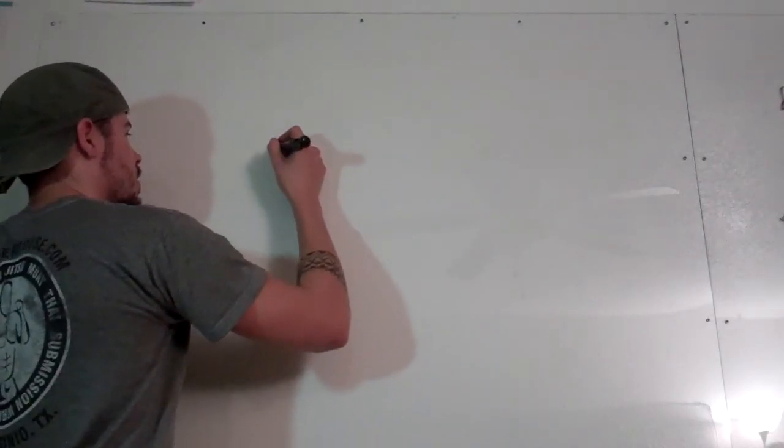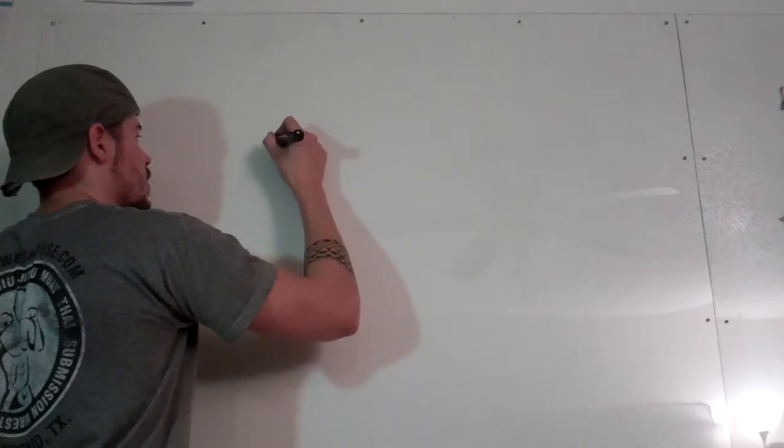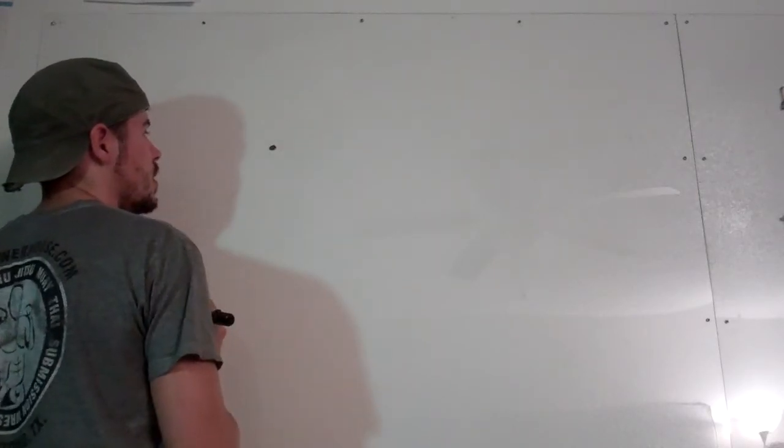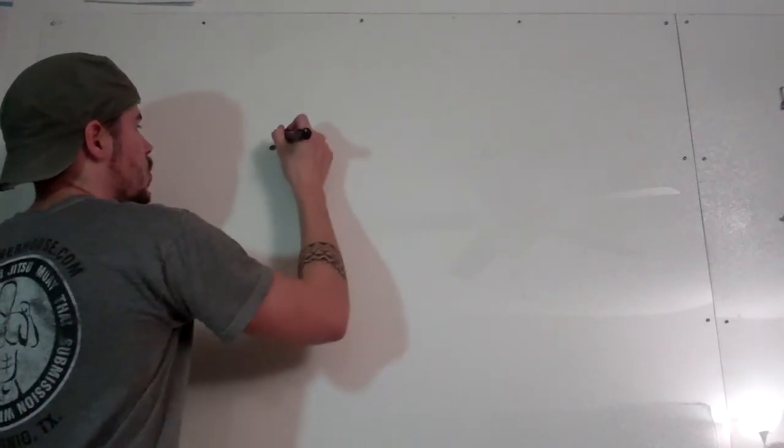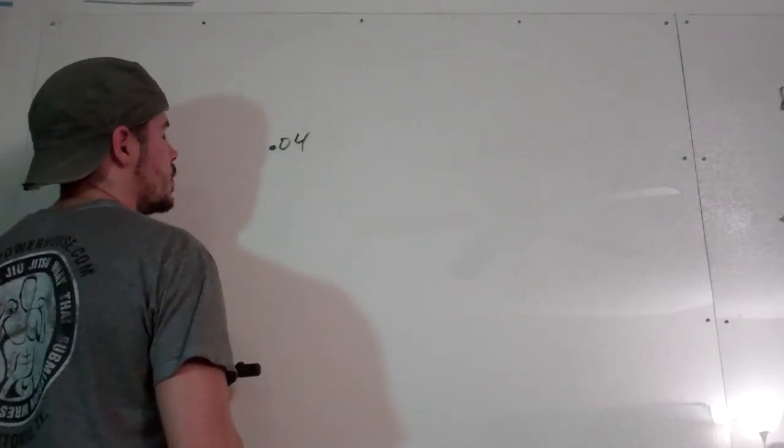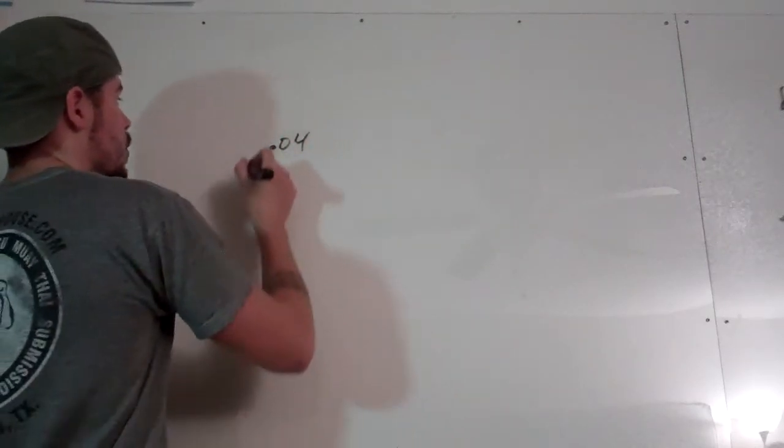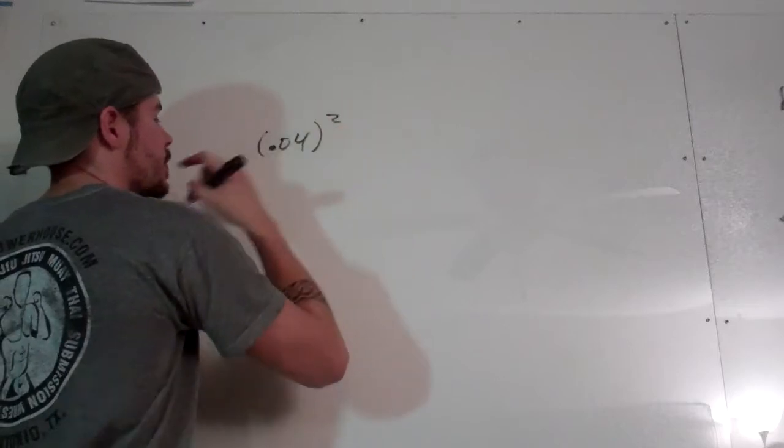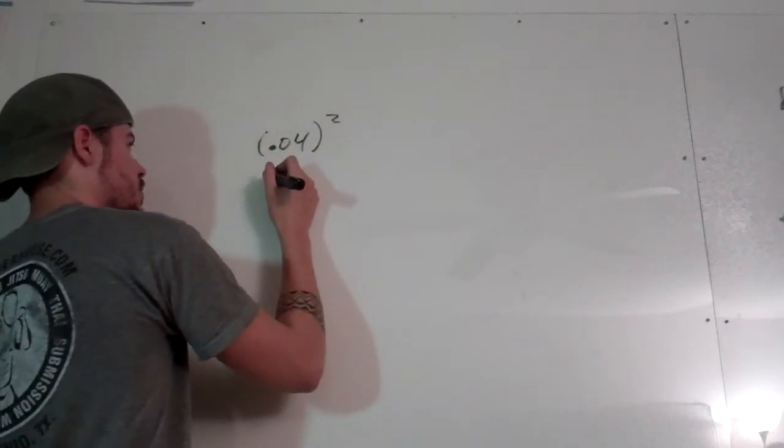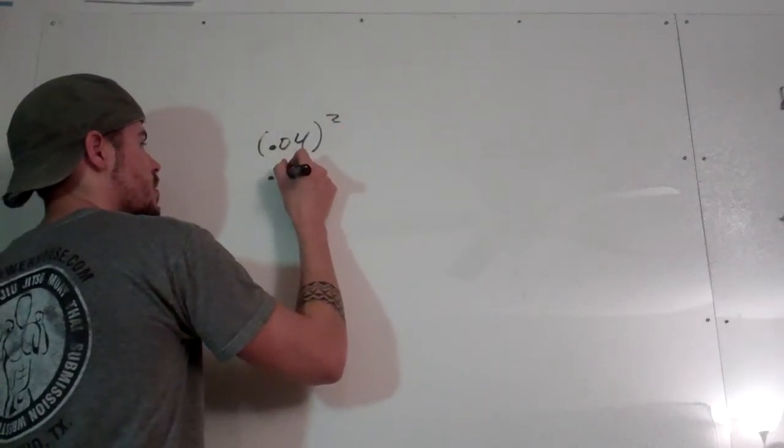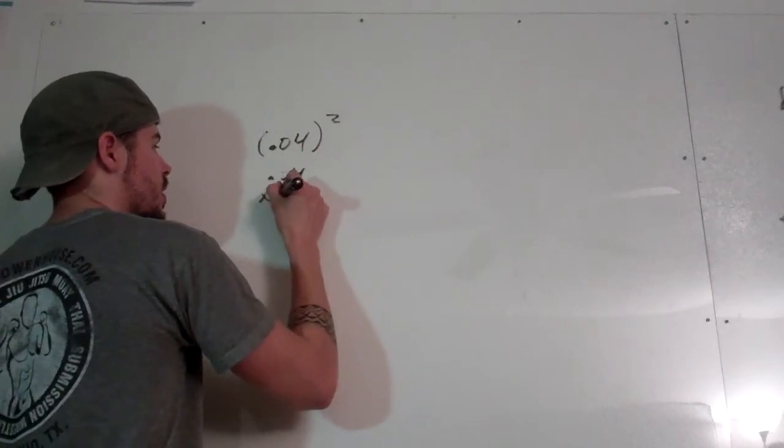Alright, let's say we have a couple of numbers that we have to multiply. We have 0.04, or let's just say we have 0.04 squared. What does that mean? 0.04 squared means 0.04 times 0.04.